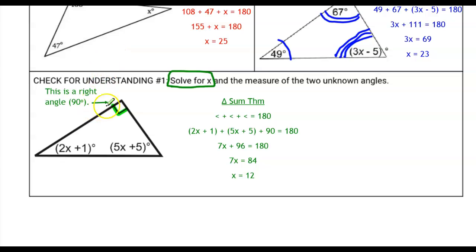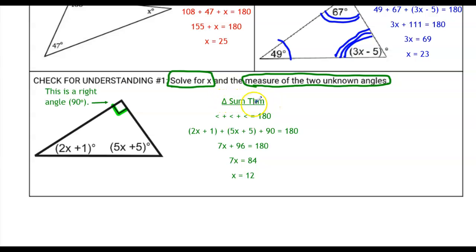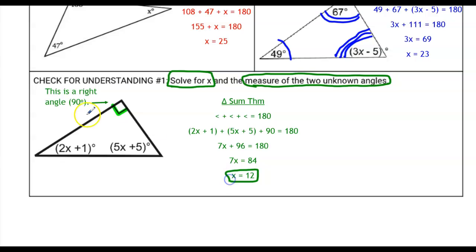We need to find x and the measure of the two unknown angles. As indicated in the diagram, this is a right angle — 90 degrees — so I already know one of my three angles for the triangle sum theorem. We substitute the values in: angle plus angle plus angle equals 180. Combining 2x and 5x gives 7x, and combining the constants 1, 5, and 90 gives 96, then solving gives x equals 12. Now I substitute x = 12 into the two unknown expressions to find their measures.